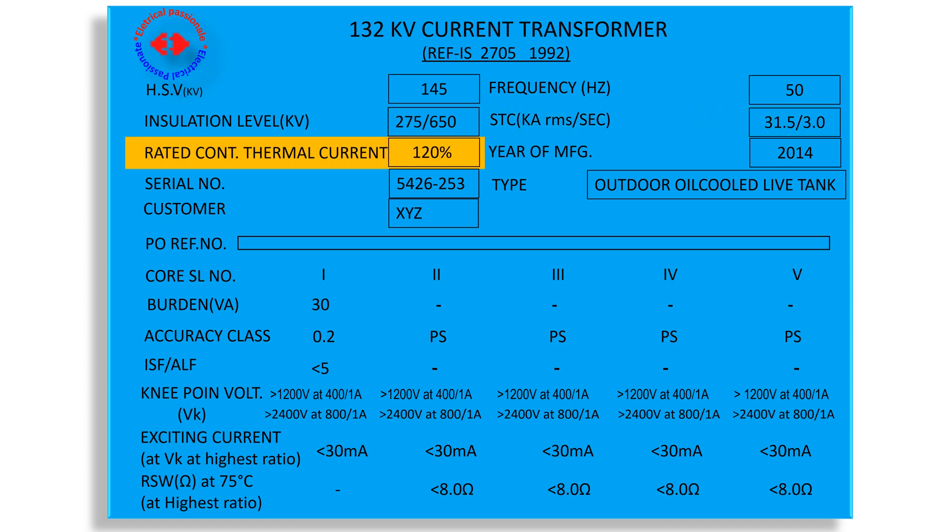Next we have here rated continuous thermal current, 120 percent. We know about rated continuous current. There is a difference between the rated primary current and rated continuous current. That is rated extended continuous current. The rated primary current is normal one in the CT. But the CT is designed to carry more than rated primary current. It is capable of carrying up to 120 percent or 150 percent of rated primary current. Here 120 percent.